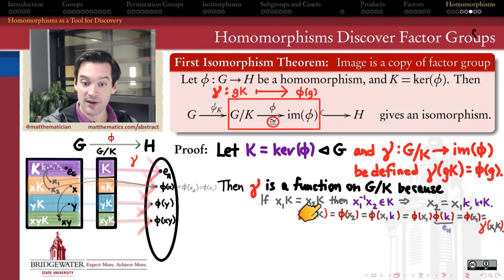So if X1K and X2K are the same coset, then gamma sends them to the same spot. So at least gamma is a well-defined function on the factor group G mod K.